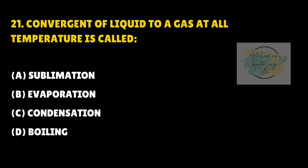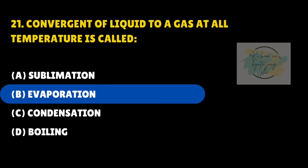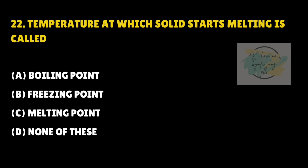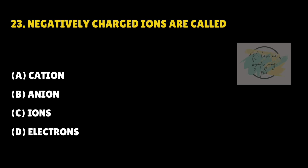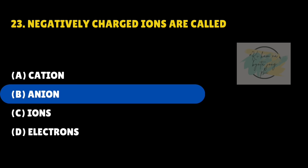Different electrons. Conversion of liquid to a gas at all temperatures is called — answer is B — Evaporation. The temperature at which solids start melting is called — answer is C — Melting point. Negatively charged ions are called — answer is B — Anions.